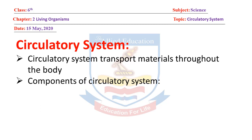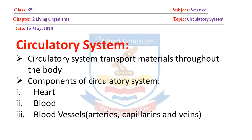Components of the circulatory system — circulatory system ke components kaun kaun se hain? Pehla component hai heart yani dil, doosra blood yani khoon, aur teesra blood vessels yani khoon ki naliyan. Blood vessels mein kaun kaun si shamil hain: arteries, capillaries, aur veins — teen tarah ki blood vessels.